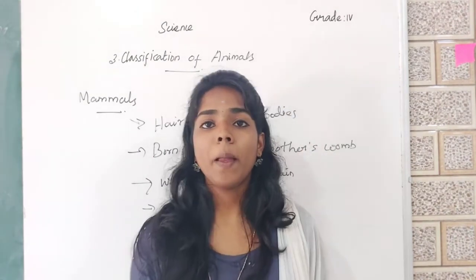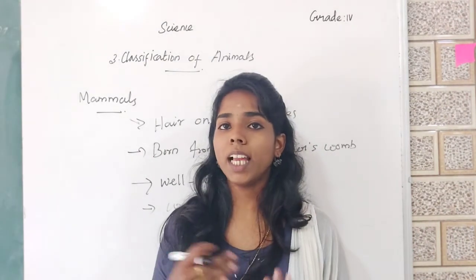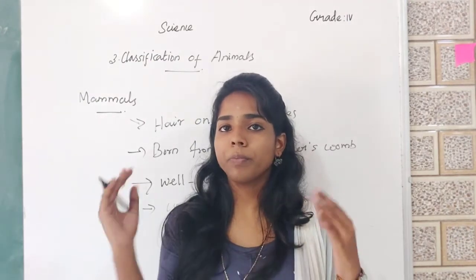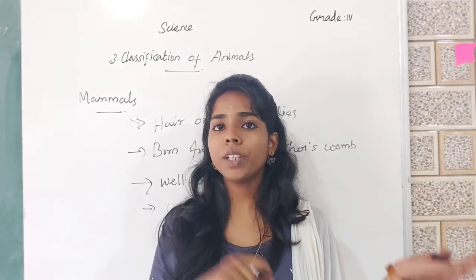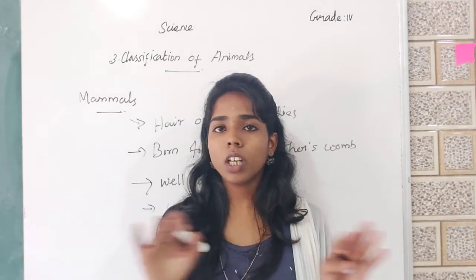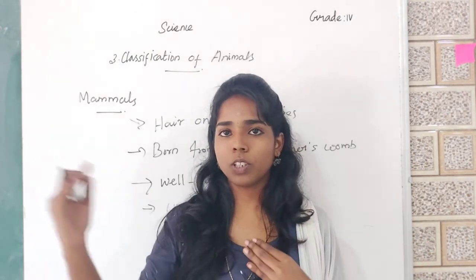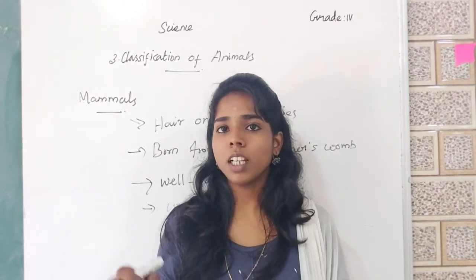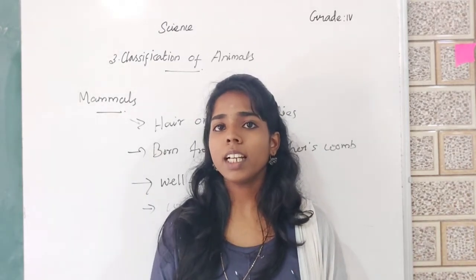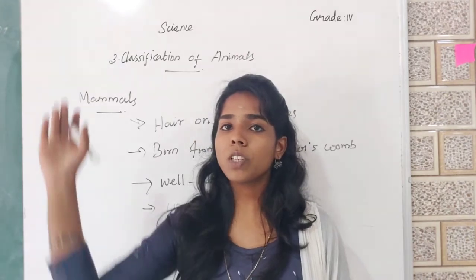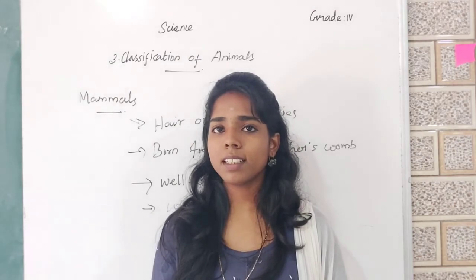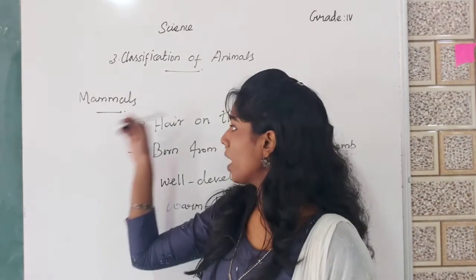Mammals also breathe with the help of lungs. The aquatic mammals like dolphins and whales also breathe with the help of lungs — they do not have gills like fish. That's why they come to the surface of the ocean and breathe in air. That's all about the features of mammals.